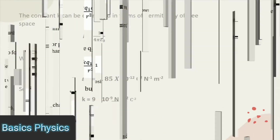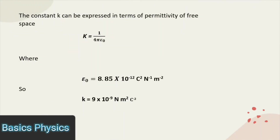The constant K can be expressed in terms of the permittivity of free space. K is equal to 1 over 4 pi E-naught, where E-naught is equal to 8.85 times 10 raised to the power minus 12 Coulomb square per Newton per meter square. Putting in these values, K equals 9 times 10 raised to the power 9 Newton meter square per Coulomb square.